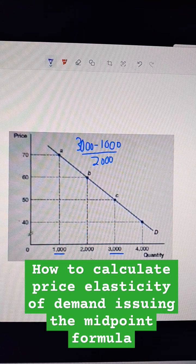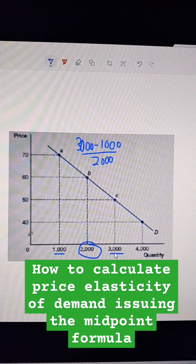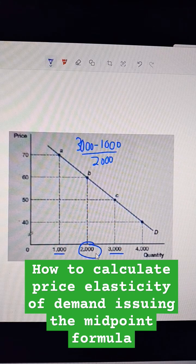And on this problem, it's kind of nice because I have a middle point right here, but if I didn't, I would just say to myself, what's the average of 3,000 and 2,000?